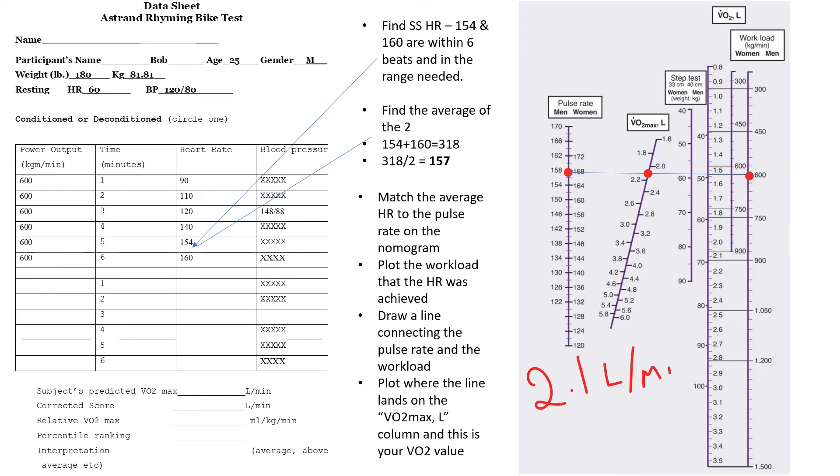right at about 2.1 liters per minute. So that number would then go into the subject's predicted VO2 max in liters per minute. For an age of 25, the corrected score is just multiplied by one, so it's the same. It would just be 2.1 liters per minute.